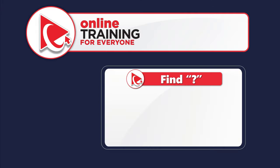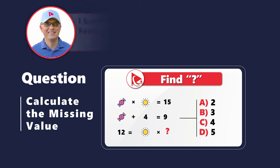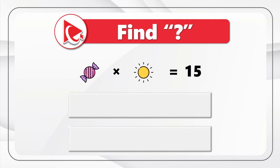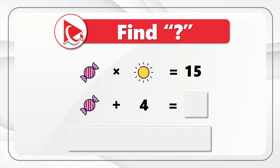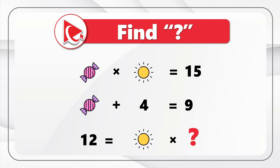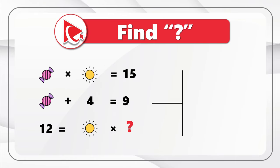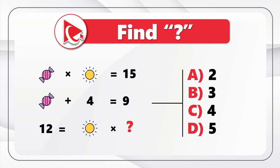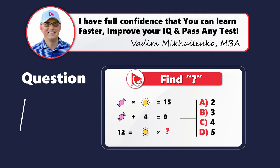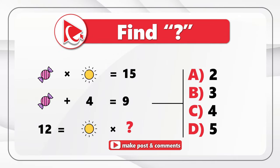Here's a question that tests your analytical and business math skills. You're presented with three expressions: candy multiplied by sun equals 15; candy plus four equals nine; and 12 equals sun multiplied by question mark. You need to find the question mark from four choices: A — 2, B — 3, C — 4, D — 5. Here's a hint: start with the middle expression. If you have a better way to solve it, please post in the comments.